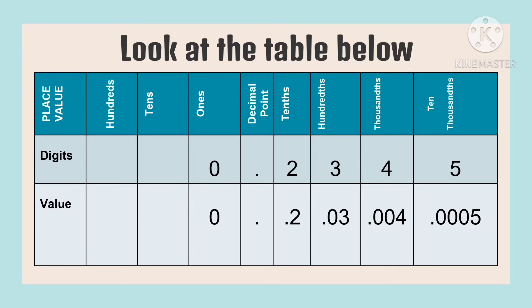We have the given digits 0, 2, 3, 4, and 5. If we're going to get the value of the digit 2, we write the value as 0.2, or it represents 2 tenths.